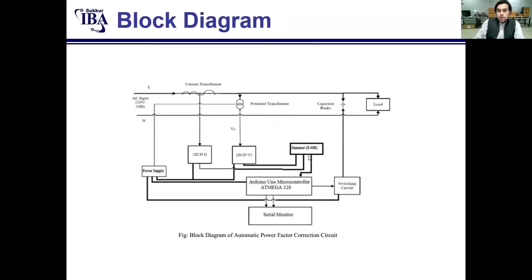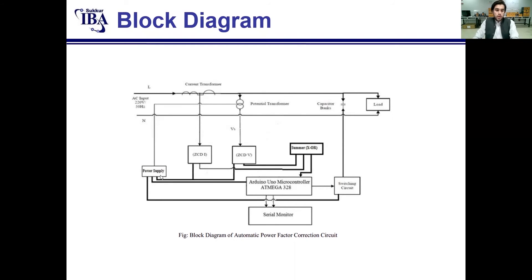The square wave signal goes into the summer circuitry, which works like an XOR gate. It calculates the time period, which further goes to the Arduino UNO microcontroller to calculate the power factor and phase shift. When we enter our desired power factor through the keypad, it will compare. If it is less, it will switch the relay module and capacitor bank to improve the power factor. The power supply is used for different circuits like op-amp ICs, summer circuitry, Arduino, and relays.